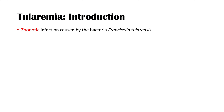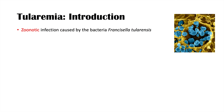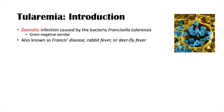Tularemia is a zoonotic infection caused by the bacteria known as Francisella tularensis. Francisella tularensis is a gram-negative aerobic bacteria, and the condition of tularemia is also known as Francis's disease, rabbit fever, or deer fly fever, among many other names.